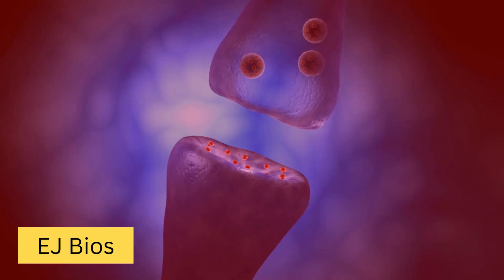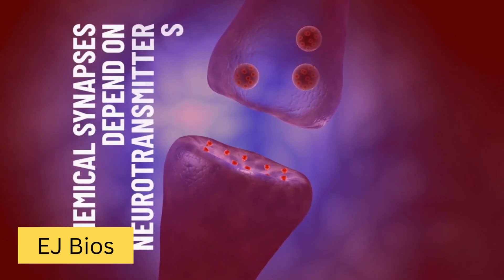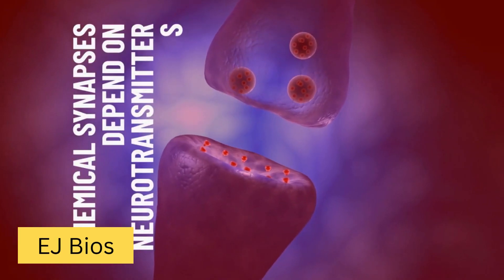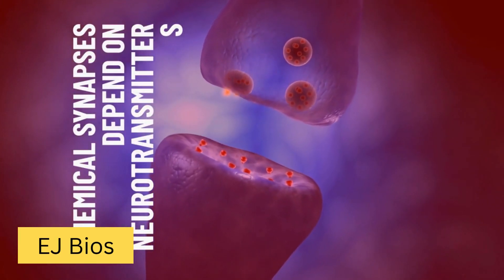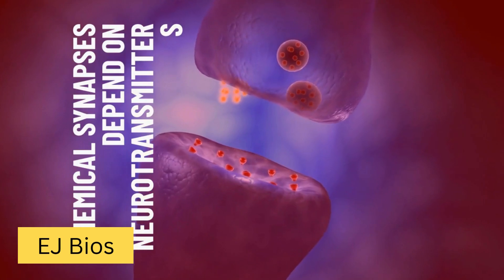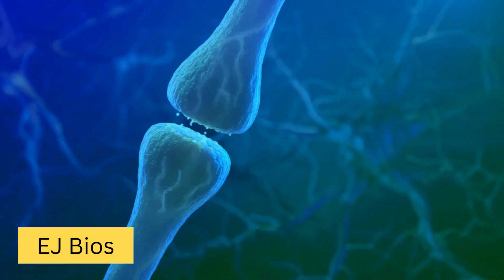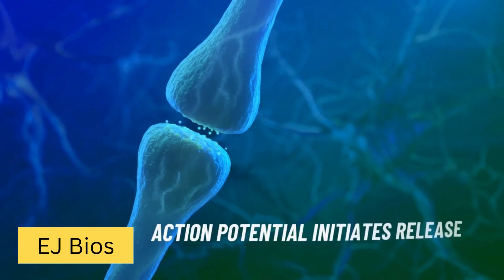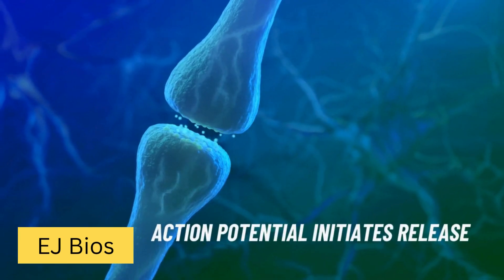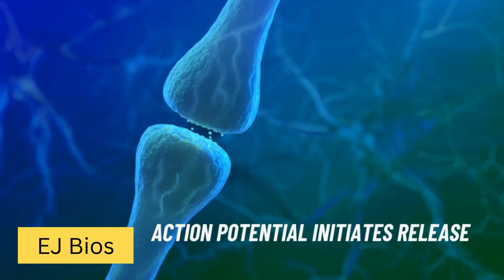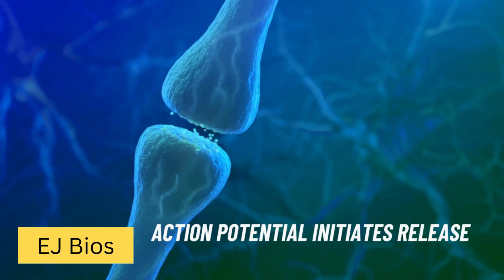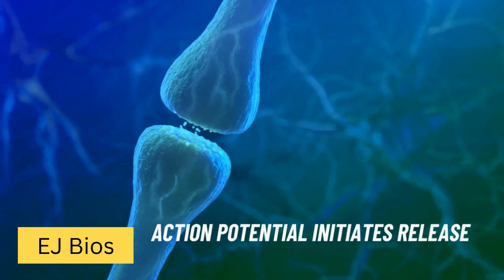Chemical synapses rely on neurotransmitters to transmit signals. When an action potential reaches the pre-synaptic terminal, it triggers the release of chemical messengers.